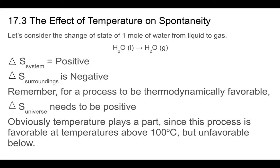For the process to be thermodynamically favorable, we want delta S universe to be positive — but it's the sum of a positive and a negative number. Whether delta S universe is positive depends on whether delta S system is more positive or delta S surroundings is more negative. This process — liquid water to gas — is favorable above 100°C but unfavorable below it. Water vapor is the stable form above 100°C; liquid water is stable below 100°C. So temperature plays a role here — it's not just the delta S of system and surroundings.